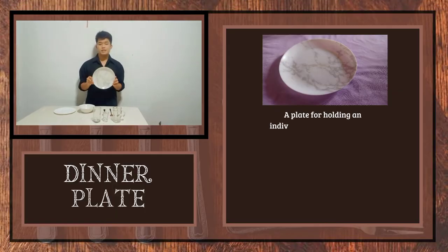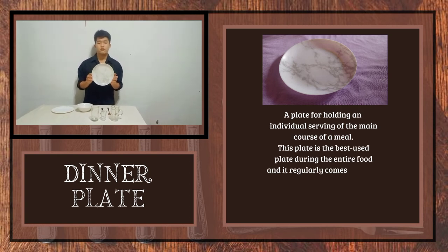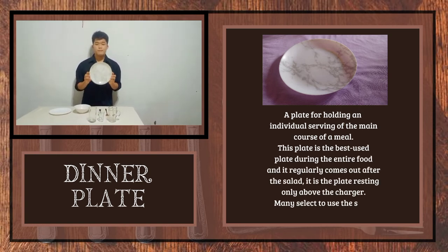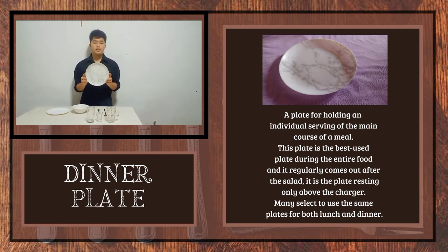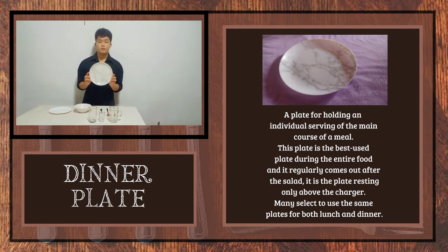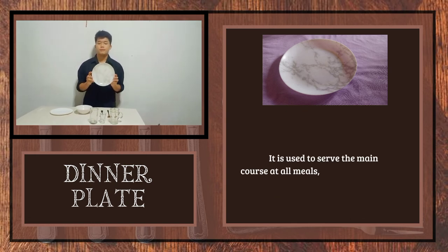The second example of dinnerware is the dinner plate — a plate for holding an individual serving of the main course of a meal. It is best used during the entire food service and regularly comes out after the salad. It is the plate that rests on top of the charger. You may select to use the same plates for both lunch and dinner, and it is used to serve the main course at all meals, formal and informal.